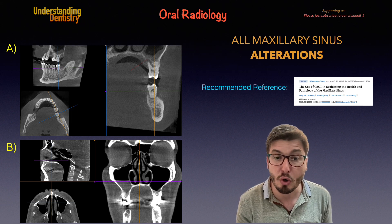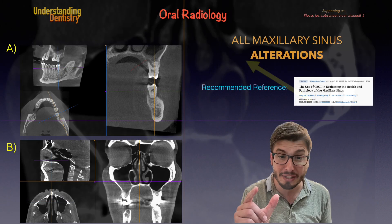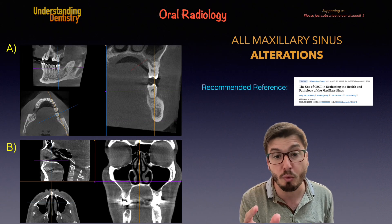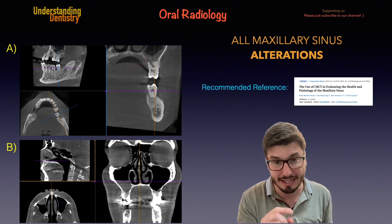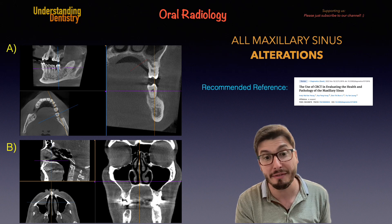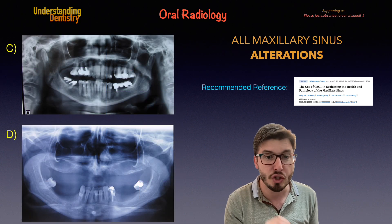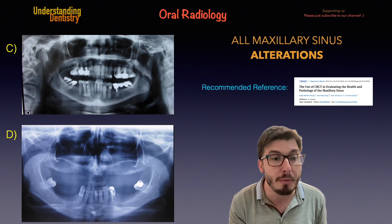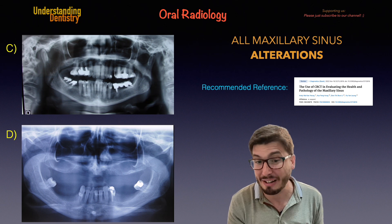We assess the ostium — the opening from the maxillary sinus to the nasal cavity — which is in the upper part of the medial wall of the sinus, which is the lateral wall of the nasal cavity. Don't forget to take a look at the recommended reference. Case C is just showing you guys a normal maxillary sinus, but with sinus septa.